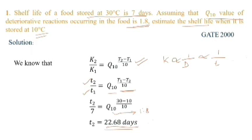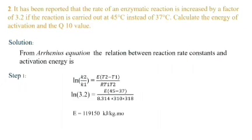The next question is: it has been reported that the rate of an enzymatic reaction is increased by a factor of 3.2 if the reaction is carried out at 45°C instead of 37°C. Calculate the energy of activation and the Q10 value.